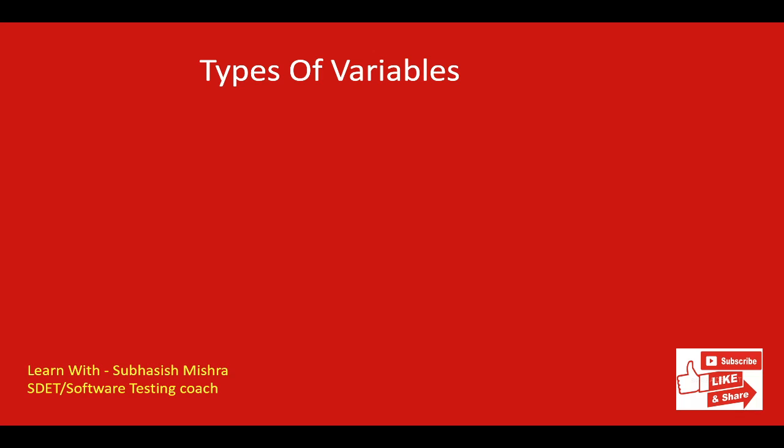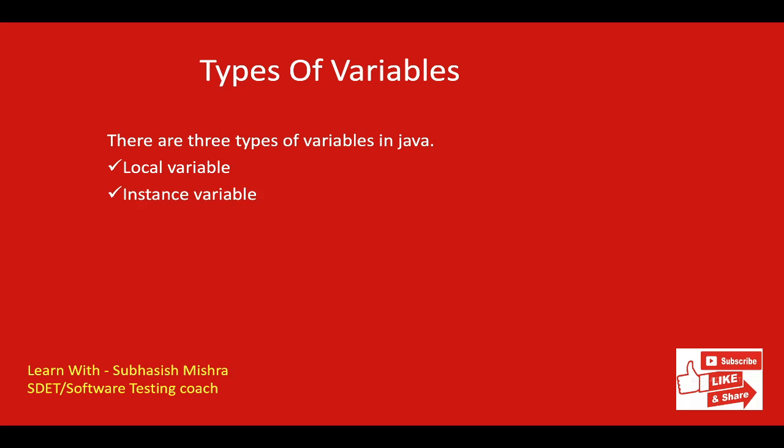So this is a complete memory representation of a variable. The next thing is types of variables. We have three types: local variable, instance variable, and static variable. A variable declared inside the body of a method is called a local variable. You can use this variable only within that method.